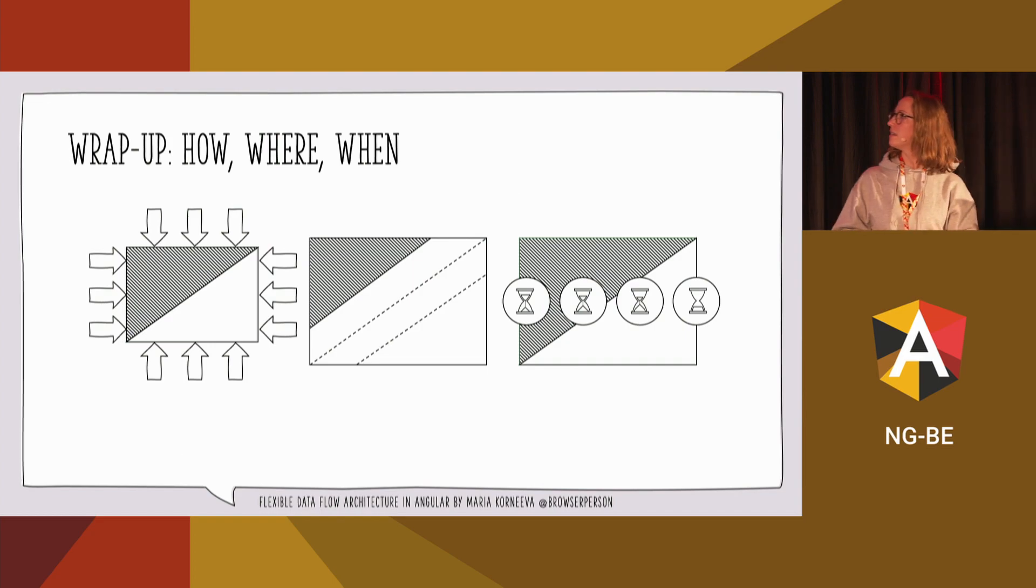So let's wrap up. When you have your architectural decisions, it might be helpful to take the data perspective on it. When you have this perspective, you might think about what are your options, what Angular gives you, how can you get the data or pass the data around. The second question would be where you want to handle this data. And the third, when do you need this data? If you combine all these three aspects, I hope that you will come to the best suitable solution for your use case.